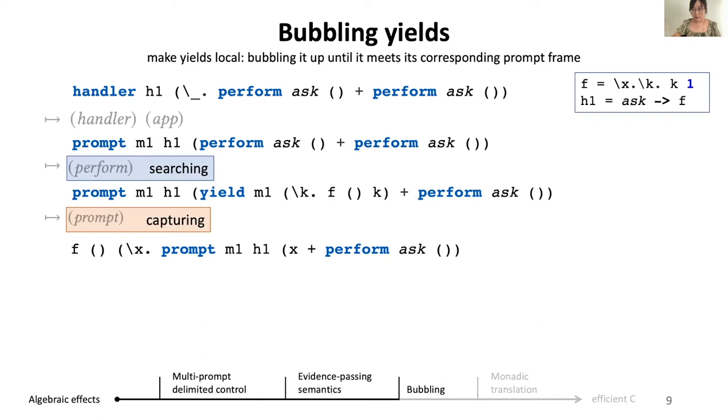However, not all operations are tail resumptive. For example, if f is of this form, then we will get back to yield and yield is still a non-local and expensive operation.